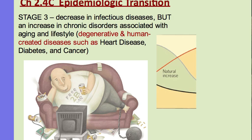In stage 3, people either die of old age — their bodies degenerate naturally — or from bad lifestyle choices. For example, eating too much and gaining weight can lead to diabetes requiring insulin, and complications can be fatal. Not exercising and gaining weight can cause a heart attack. Smoking or exposure to toxic chemicals in the environment can lead to cancer. Think of it this way: to degenerate is the opposite of to generate — bodies get old and die from natural or lifestyle-related causes.